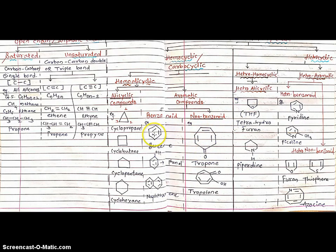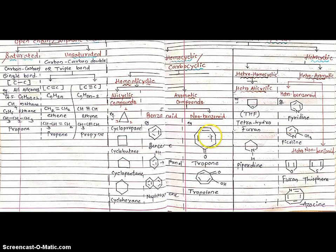First example of aromatic compounds: benzene C₆H₆, containing alternate single-double bonds. Second example: phenol, which also contains a benzene ring. Third: naphthalene, containing two benzene rings. These are benzenoid. Examples of non-benzenoid include tropone (seven carbon atoms) and tropolone (also seven carbon atoms) — these have benzene-like rings but not a correct benzene ring, hence they are non-benzenoid.